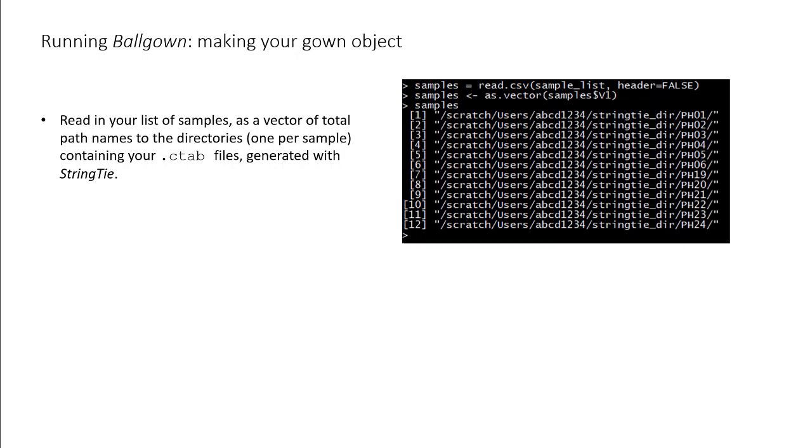Next, we must load in a list of strings that are full paths to the directories containing the CTAB files generated by StringTie. There should be one sample per directory. Here, we've loaded in a text file containing the list of paths, which we assign to the variable sample.